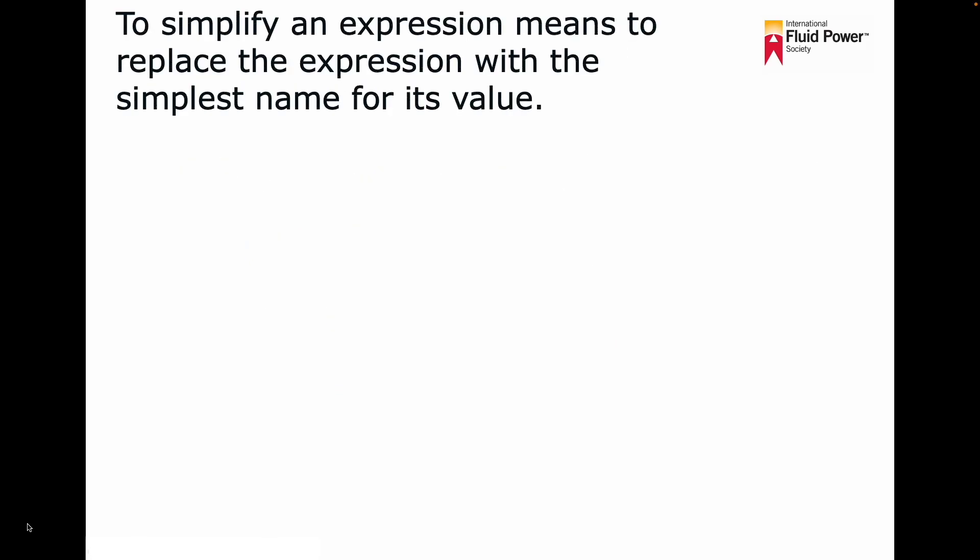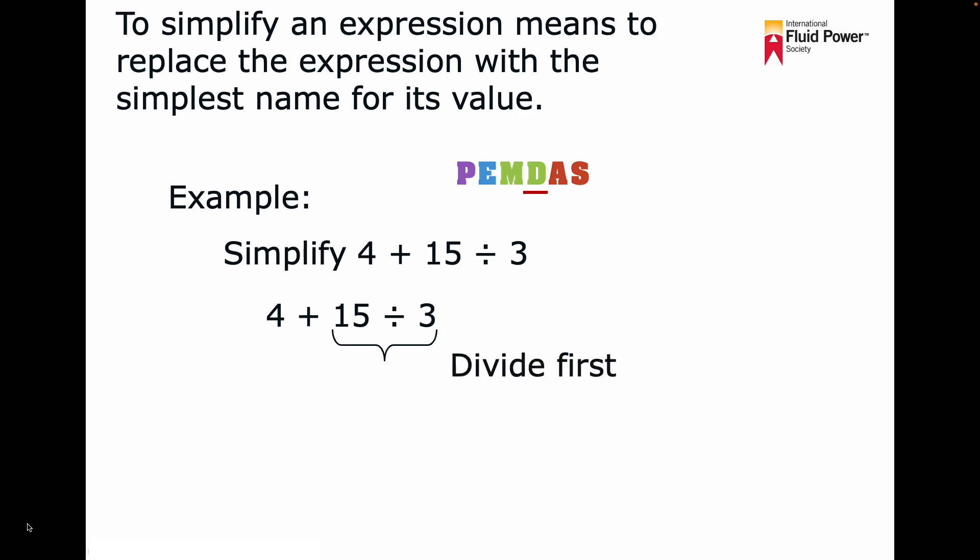To simplify an expression means to replace the expression with the simplest name for its value. For example, let's use PEMDAS to simplify 4 plus 15 divided by 3. PEMDAS says we would divide first, so 15 divided by 3 equals 5. Then we add 4 plus 5 equals 9. Therefore, the correct answer to this example is 9.